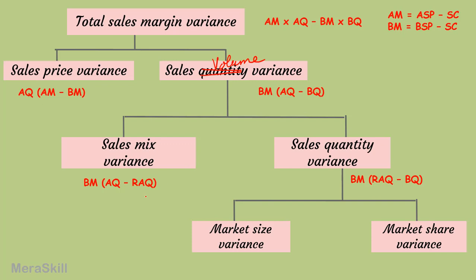The mix variance formula uses budgeted margin into actual quantity minus the revised actual quantity — that is, actual quantity restated into the standard mix of the products. If I am selling three products in an equal ratio but actually sold them as 30% and 40%, we remove that mix effect. Once that is removed, the revised actual quantity versus budgeted quantity gives the quantity variance.